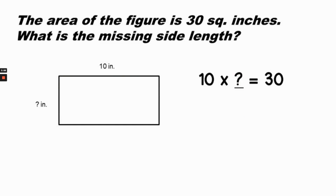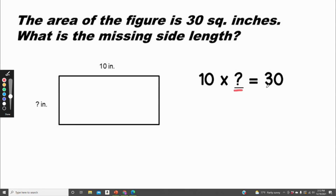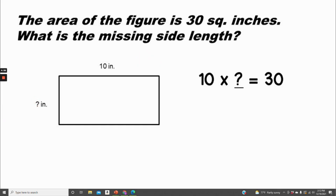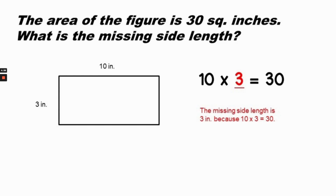The area of this figure is thirty square inches. What is the missing side length? Ten times the unknown equals thirty. We can count by tens: ten, twenty, thirty — so ten times three equals thirty. That means our missing side length must be three inches.